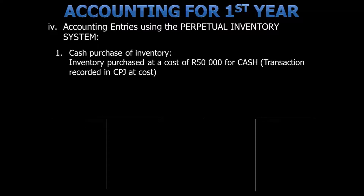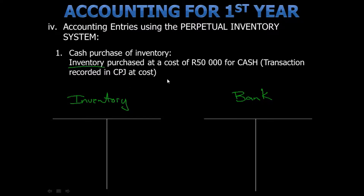So let's have a look at some practical examples using the perpetual inventory system. Inventory is purchased at a cost of 50,000 rand for cash. This transaction will be recorded in the cash payments journal at cost price. Remember, inventory is an asset, so we are dealing with the inventory account, and since this was a cash purchase, we are dealing with bank. Inventory increases because we have purchased inventory, so on the debit side we will increase inventory by 50,000 rand. This was a cash purchase, which means money is leaving the bank. Bank is also an asset, and assets decrease on the credit side. Therefore, we will credit bank with 50,000 rand.